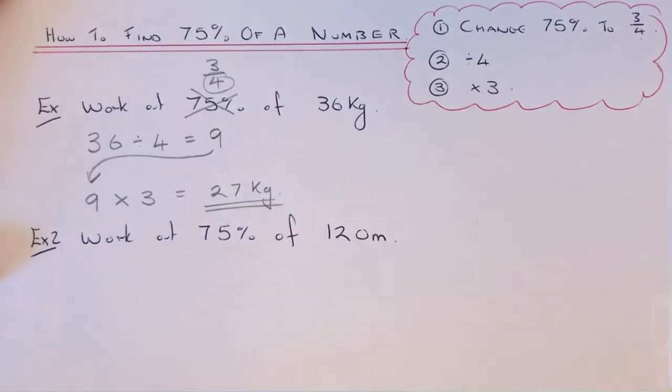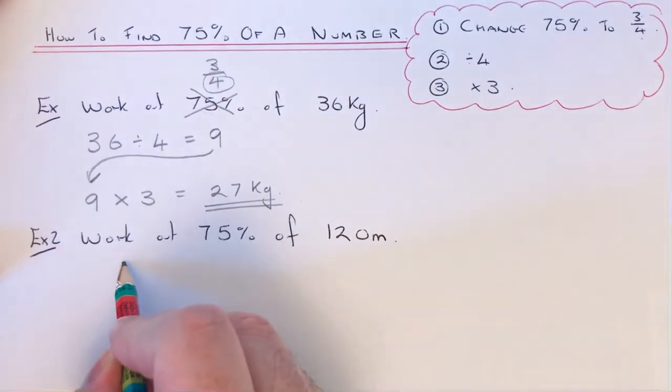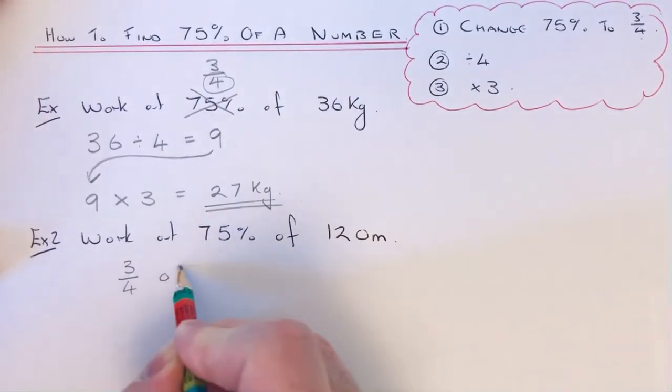So the final answer is 27 kilograms. Let's move on to example two. We're going to work out 75% of 120 meters. Again, we know 75% is three quarters, so we're going to work out three quarters of 120 meters instead.